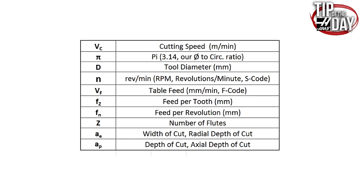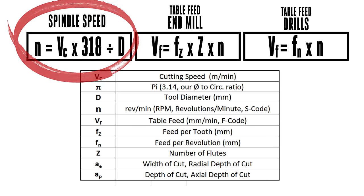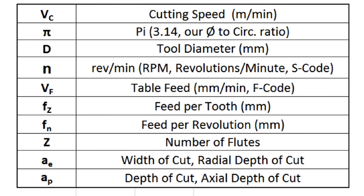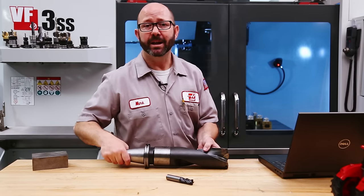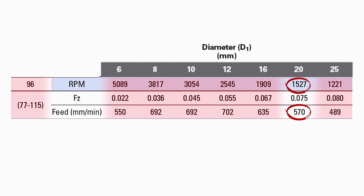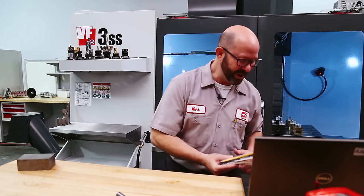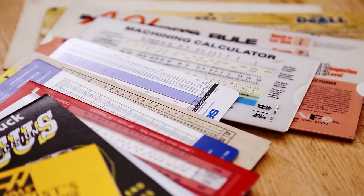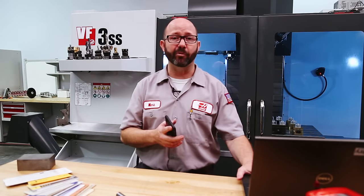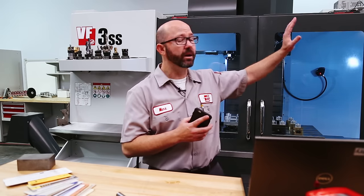Here is the completed legend and the formulas we typically use for calculating our speeds and feeds — our cutting speed formulas, spindle speeds, feed rate formulas for both end mills and drills, and all of the notations and symbols you'll see over and over again in your tool catalogs. There's also a big shift happening with tooling catalogs — a lot of them are just giving us feed rate and RPM values directly, so you may open up your manual and find you don't have to do any math at all. In the past we used slide rules; today we're more likely to use an app on our phone or a piece of software on our computer.